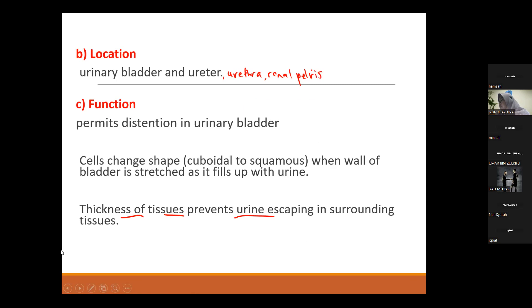That concludes epithelial tissue. A student asked whether the stomach also has transitional epithelium — the answer is no. The stomach wall has smooth muscle, which is what allows it to expand. That expansion is due to muscle, not transitional epithelial tissue.